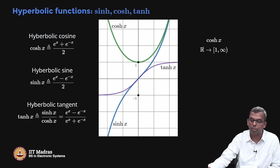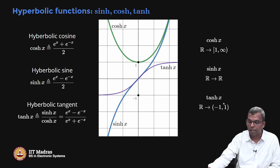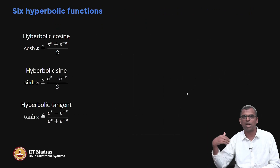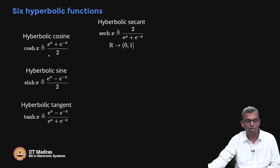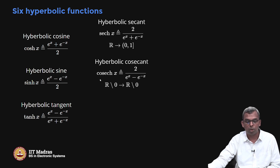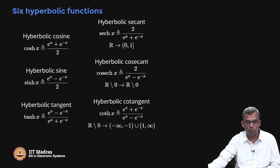Cosh maps all real numbers to [1, ∞), since e^x + e^(−x) ≥ 2. Sinh maps real numbers to real numbers. Tanh maps all real numbers to (−1, 1). You can plot these on Desmos and see how they behave. We can also define sech (reciprocal of cosh), which maps real numbers to (0, 1]; csch (reciprocal of sinh), defined on ℝ \ {0}; and coth (reciprocal of tanh), mapping to (−∞, −1) ∪ (1, ∞).